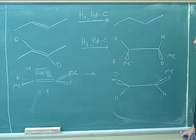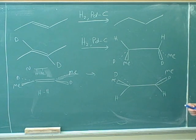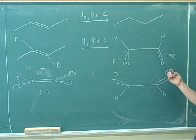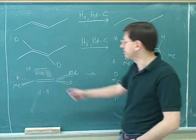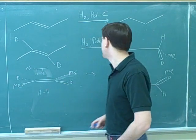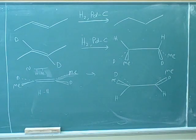Remember our general rule. Anytime we attack something trigonal planar, we get a maximum of two products. So if you're attacking something trigonal planar, you should ask if you're going to get those two products. Well, here we're attacking something trigonal planar, so if we're producing stereocenters, we're going to get those two products.